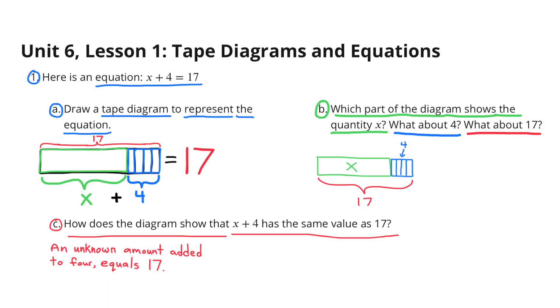Part C: How does the diagram show that x plus 4 has the same value as 17? An unknown amount added to 4 equals 17. The x represents the unknown amount.